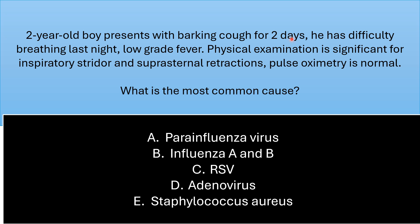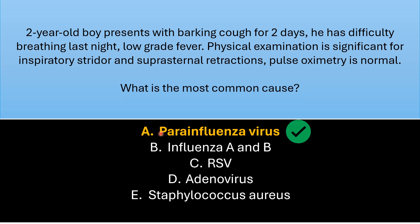This is a two-year-old boy presenting with barking cough for two days, difficulty breathing, and low-grade fever. Physical examination shows inspiratory stridor and suprasternal retractions; pulse oximetry is normal. What is the most common cause of his barking cough: parainfluenza virus, influenza A and B, RSV, adenovirus, or Staphylococcus aureus? The correct answer is parainfluenza virus — the most common cause of croup in pediatrics.